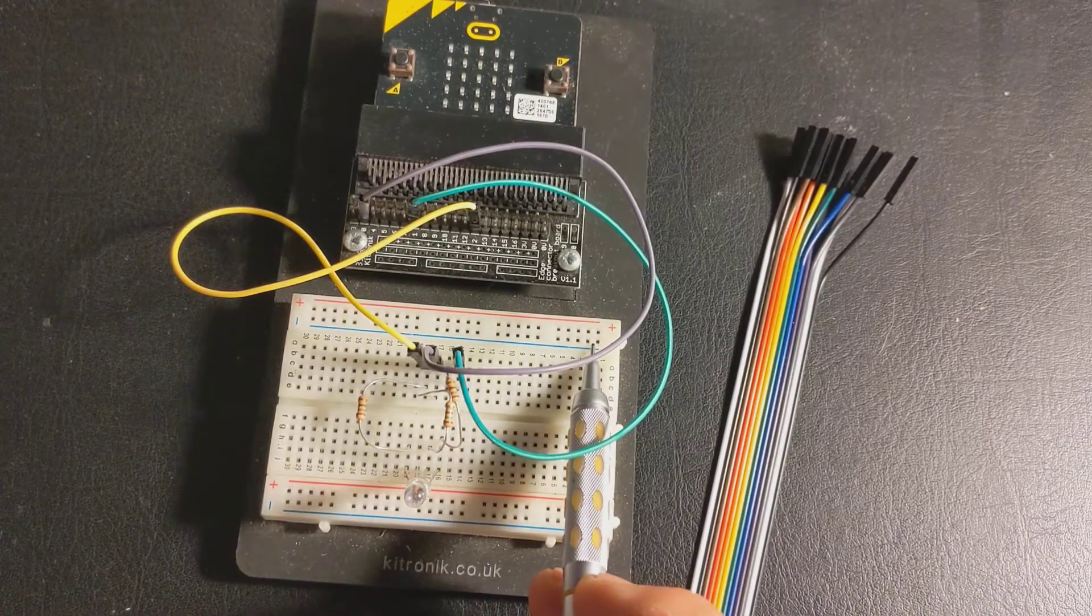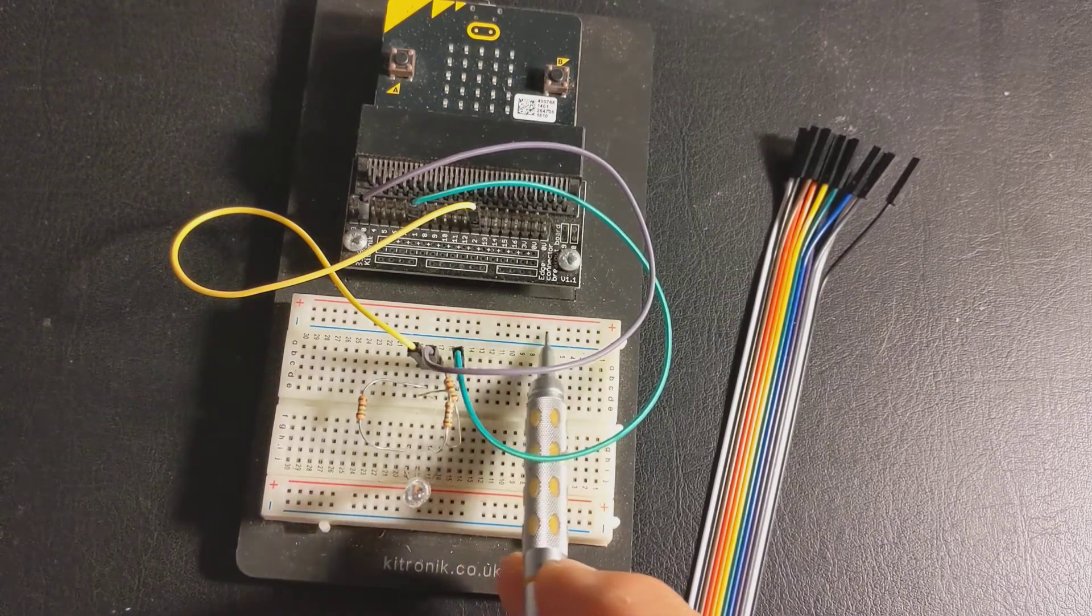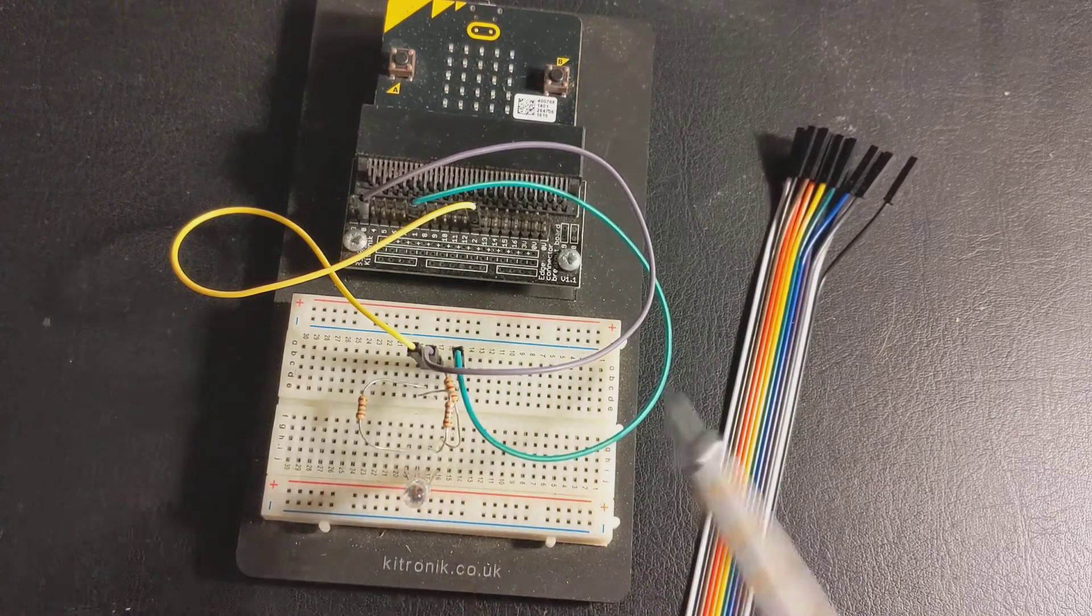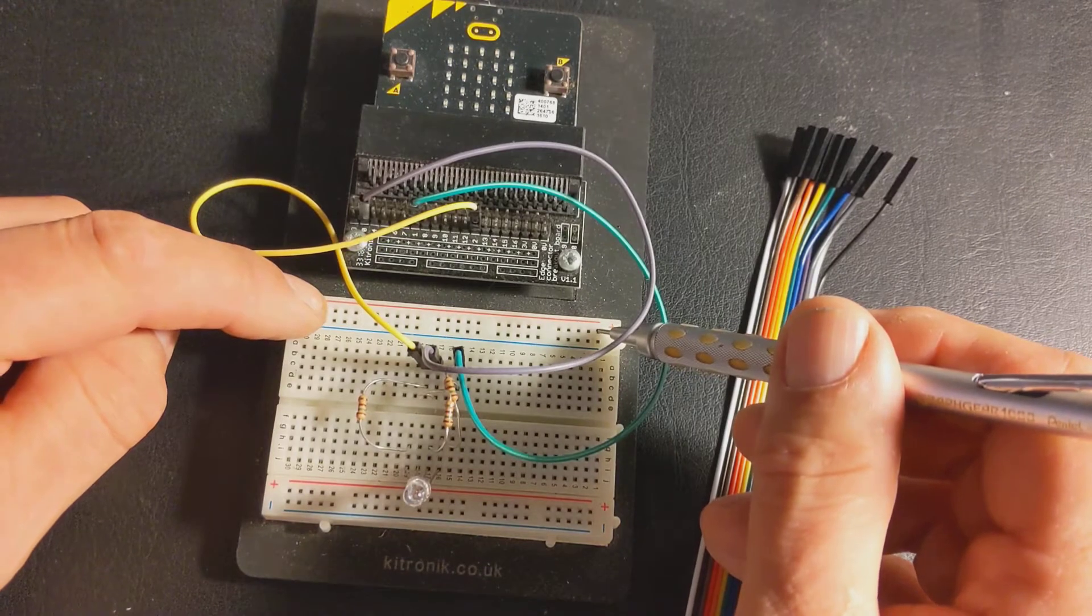Let me try and explain how the breadboard works. The outer two tracks, that's this row going along here, the long row and the one next to it, are joined together on the length of the board. So if I put something in this pin right here and something in the pin down the end, they would be joined together.